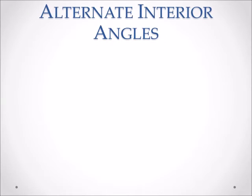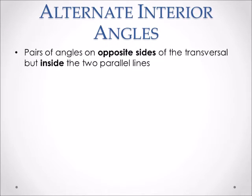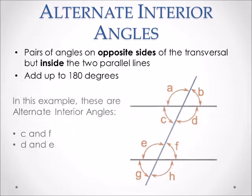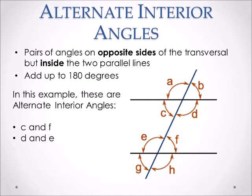Moving on to alternate interior angles. Alternate interior angles are pairs of angles on the opposite side of the transversal, but inside the two parallel lines, and they also add up to 180 degrees. If you have two parallel lines cut by a transversal, you want to look for the letter Z. In this example, there are two pairs of alternate interior angles: angle C and F, as well as angle D and E.